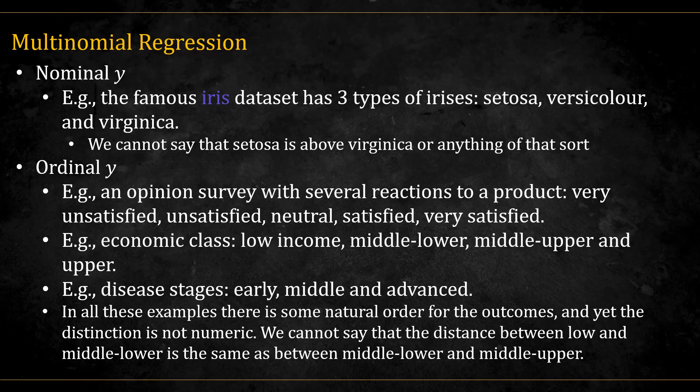For ordinal data, we can have an opinion survey with several reactions to a product, ranging from very unsatisfied to very satisfied. Or we can have economic class: low income, middle lower, middle upper, and upper. Or we can have stages of a certain disease: early, middle, and advanced.